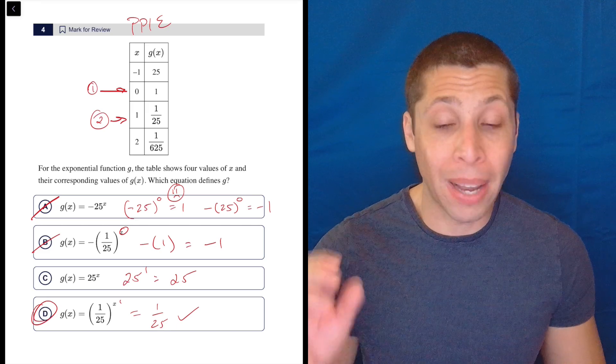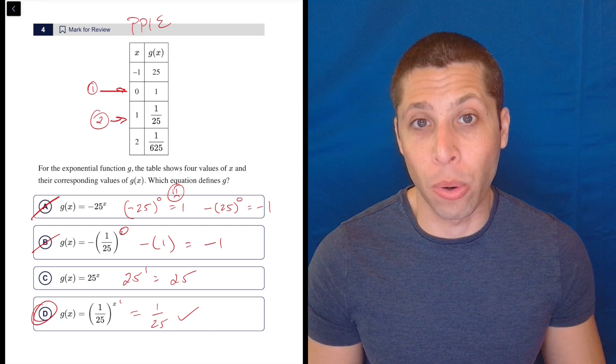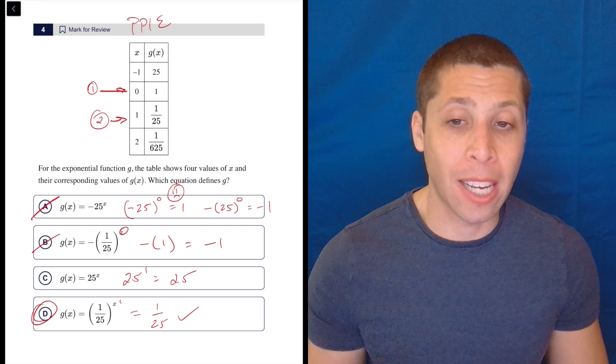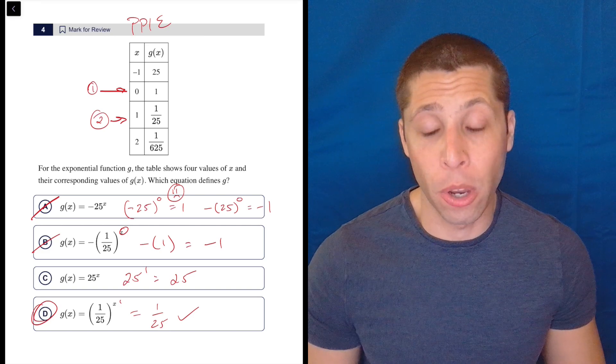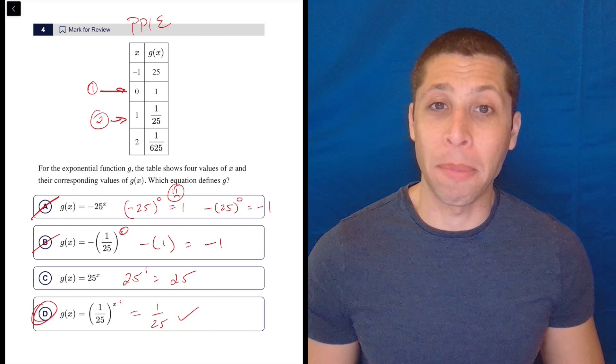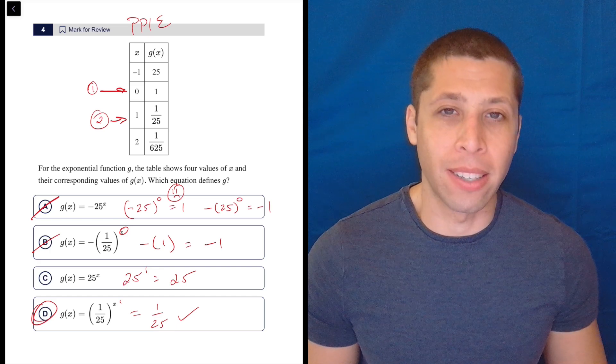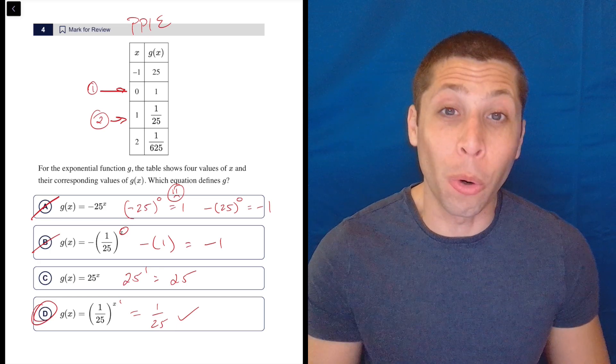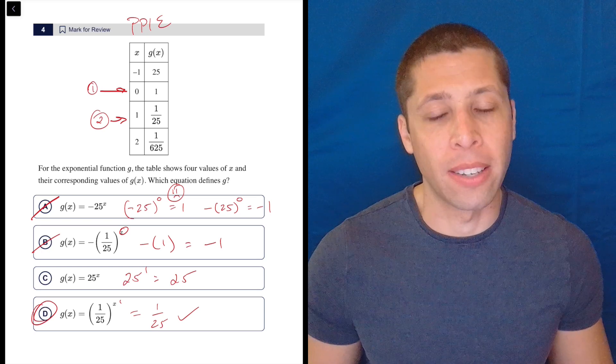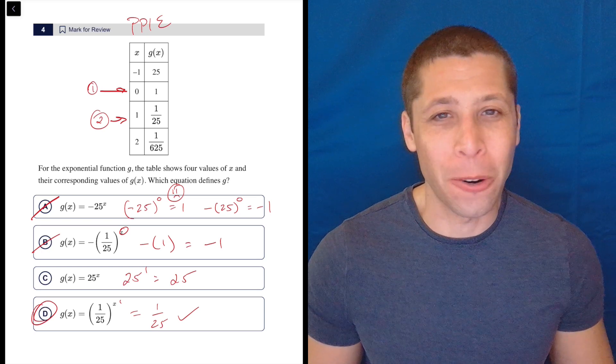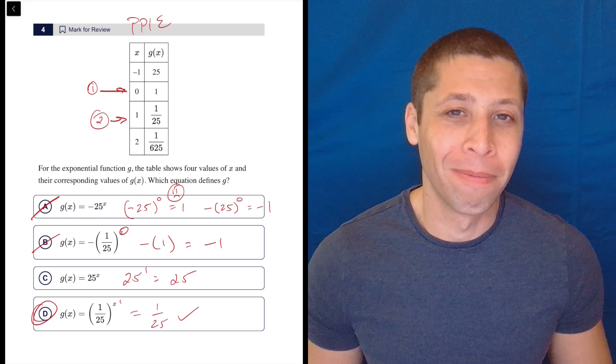So doing this right the first time by instantly recognizing to plug points into equations, thinking about how these exponents will work and picking the lazy numbers, all that stuff should streamline this process for you. And then if by some miracle, you have time left over at the end, you could always come back to this and throw it in Desmos and just make sure that all the other points work as well. But you really don't need to here. You got to be confident on this and how this stuff works. Otherwise, those hard questions aren't going to make much sense to you at all. All right, you can do this.